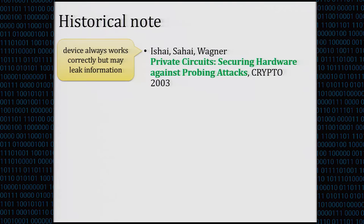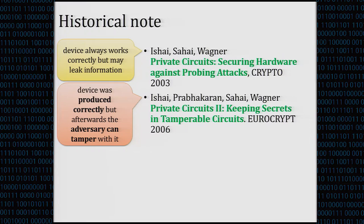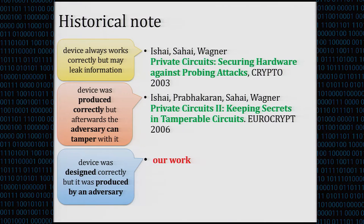We call it Private Circuits 3, and it relates to previous work on private circuits. It started in 2003 with a paper by Ishai, Sahai, and Wagner, considering side channel attacks on devices — assuming the device works correctly but leaks something. That was Private Circuits 1. Then Private Circuits 2 extended the model, assuming the adversary can also tamper with the device. Our paper is the third in this line, where we assume that even the manufacturing process of the circuit may be faulty.